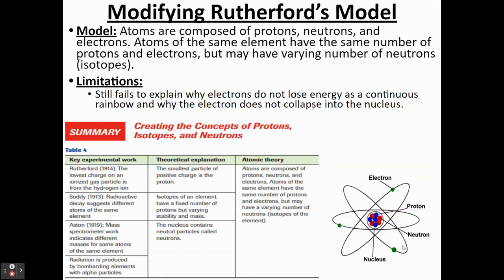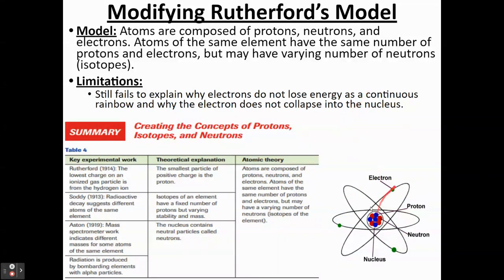There's still a problem, though. We have electrons orbiting and a nucleus with protons and neutrons. The main problem that remains is that electrons orbiting the nucleus should be losing energy continuously — a nonstop loss of energy — and as a result, they should eventually spiral into the nucleus and obliterate the atom. But that's not happening. If it were, you wouldn't be here, your pencil wouldn't be here, your laptop wouldn't be here. So why isn't the electron colliding into the nucleus as it continuously loses energy? That's the main problem currently.